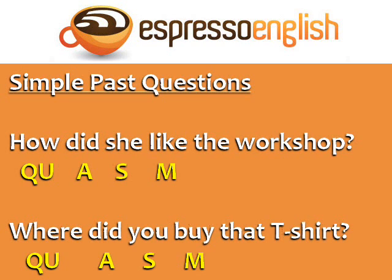Questions in the simple past also follow this pattern. How did she like the workshop? Where did you buy that t-shirt? For questions in the simple past, the auxiliary verb is 'did'.